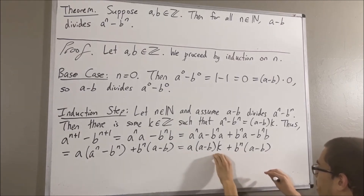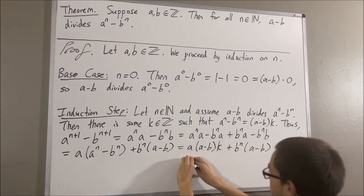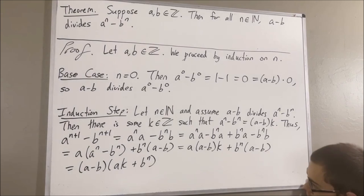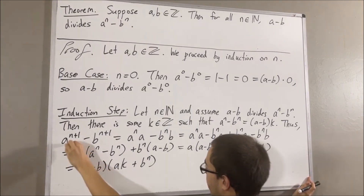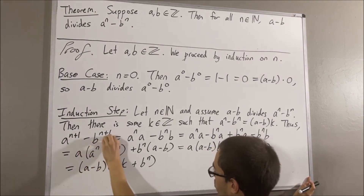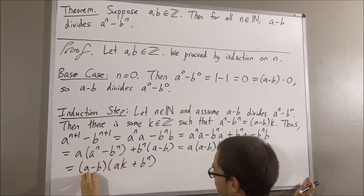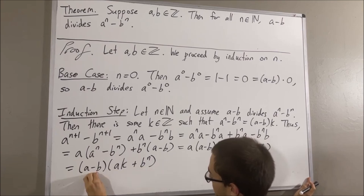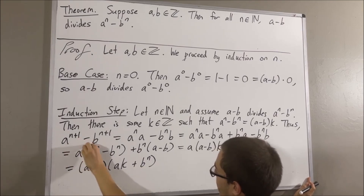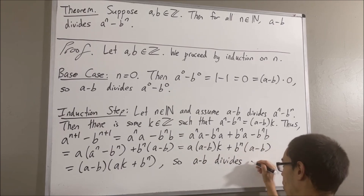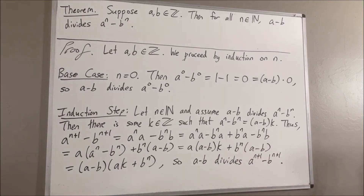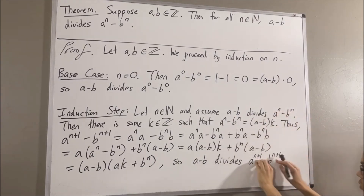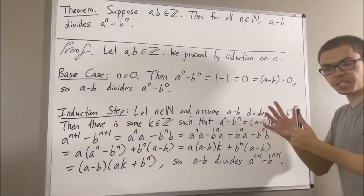From these two terms, we can factor out A minus B. So we have shown that A to the n plus one minus B to the n plus one is equal to A minus B times some integer, and this tells us that A minus B divides A to the n plus one minus B to the n plus one. So we have shown that this is true where instead of n, we have n plus one. This completes the induction step.